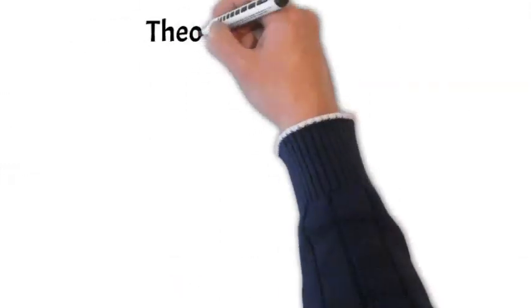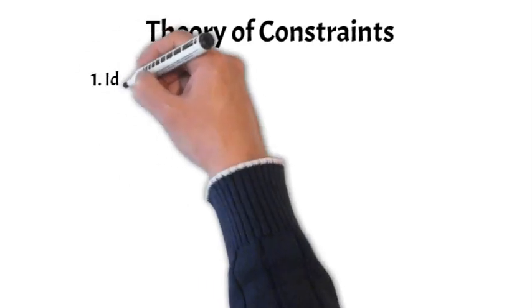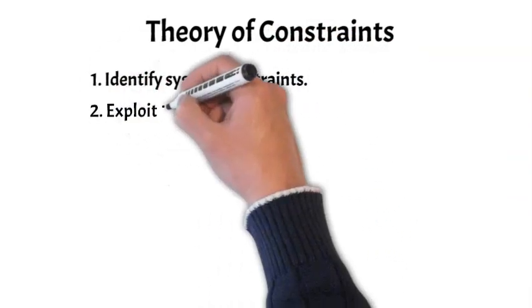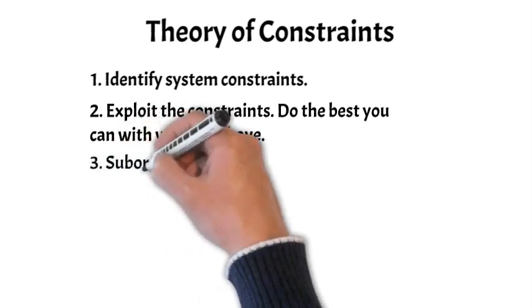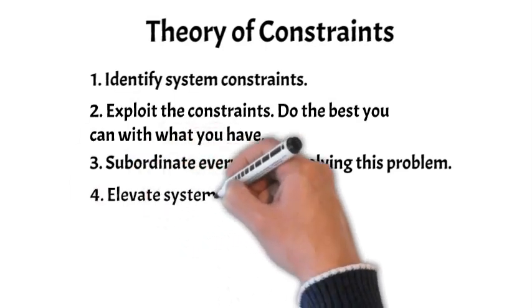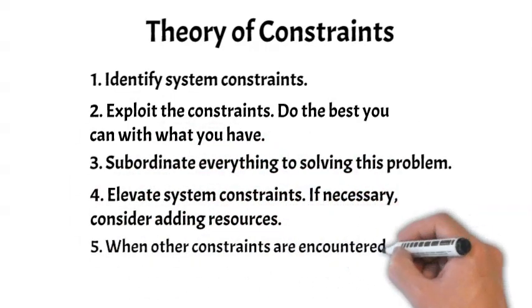The theory of constraints is an approach that helps process improvement specialists recognize and overcome the constraints that interfere with the achievement of project goals. It is a theory that was created by Eliyahu Goldratt, a physicist who later turned to business consulting.